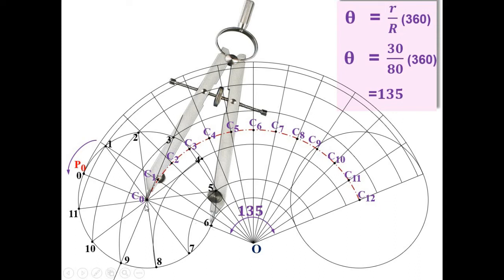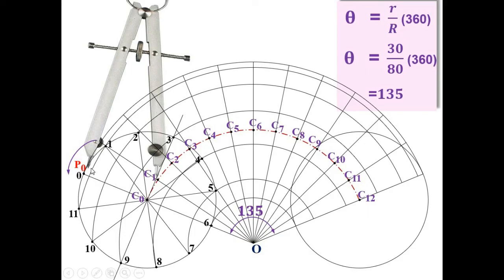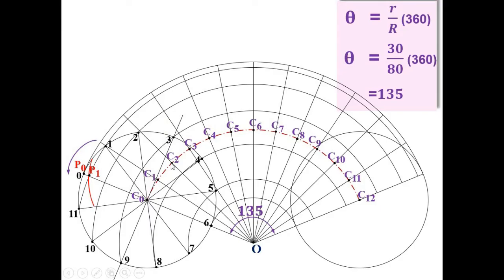Take the compass and set the radius equal to half of the rolling circle diameter (i.e., 30 mm). With C1 as the center, draw the arc on the arc passing through point number 1 and mark it as P1. Next, with the same radius but C2 as the center, draw the arc on the arc passing through point number 2 and mark it as P2. Similarly, with C3 as center, draw the arc on the arc passing through point number 3.